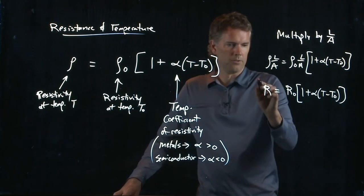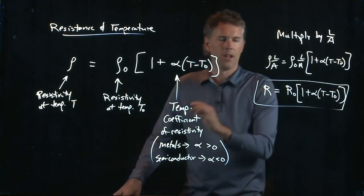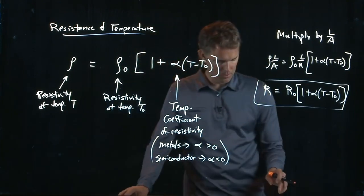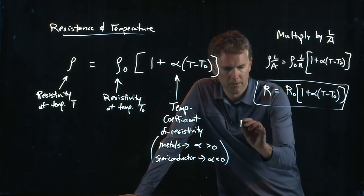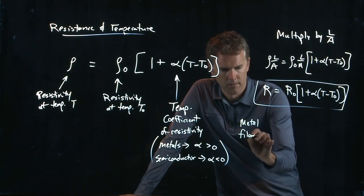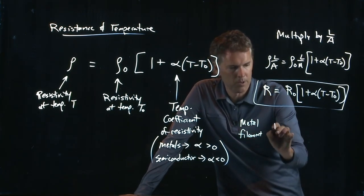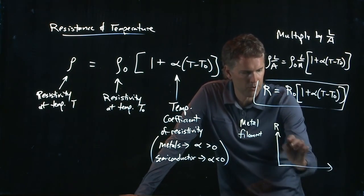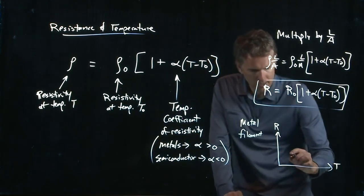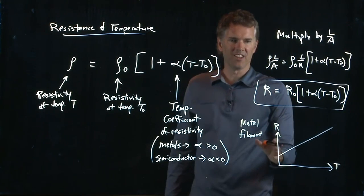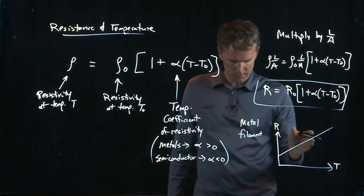Okay, and this is a relationship between resistance and temperature. So if I have a normal metal filament, and we plot out R as a function of temperature T, what it looks like is this. The resistance increases with temperature.